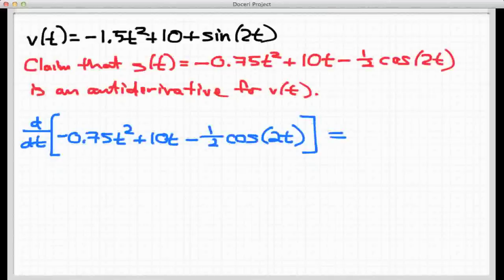So we were given a velocity function, v of t equals negative 1.5t plus 10 plus sine 2t, and we're going to claim that the function s of t equals negative 0.75t squared plus 10t minus 1 half cosine 2t is an anti-derivative for that velocity. So all this requires is simply that I take the derivative of the thing that I claim is the anti-derivative and see if I end up with the velocity function. That would make the new function s of t an anti-derivative for velocity. So here I have set up the derivative of my anti-derivative, and hopefully they will sort of cancel each other out, and I'll end up with v of t.